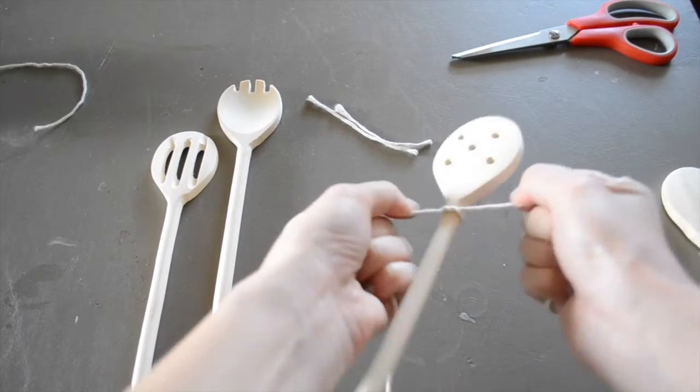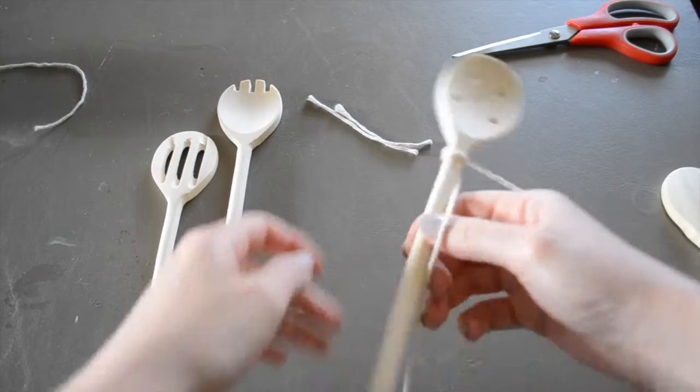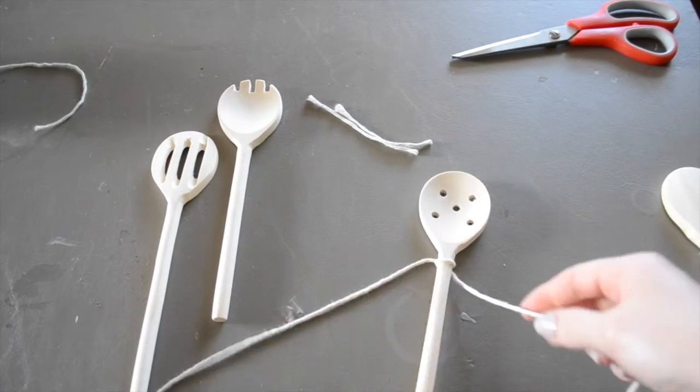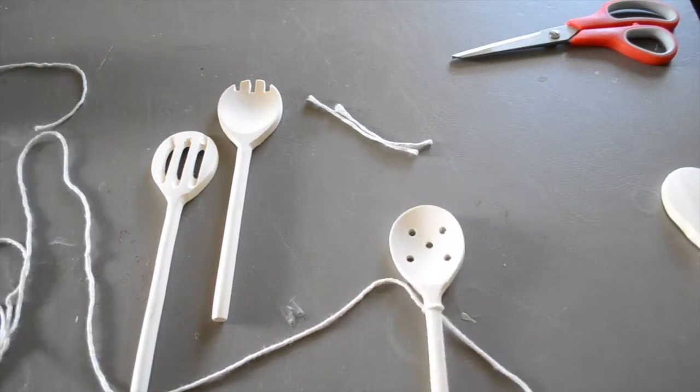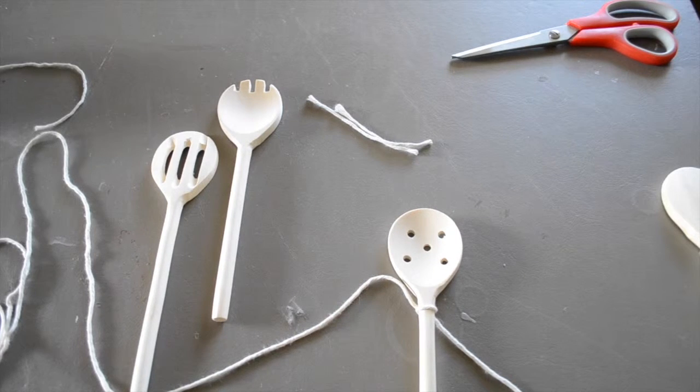There we go, nice and tight. Flipping this back over to the front, now comes the part where I'm going to teach you how to do the knot. This is the step you'll be repeating all the way down the wooden handle.